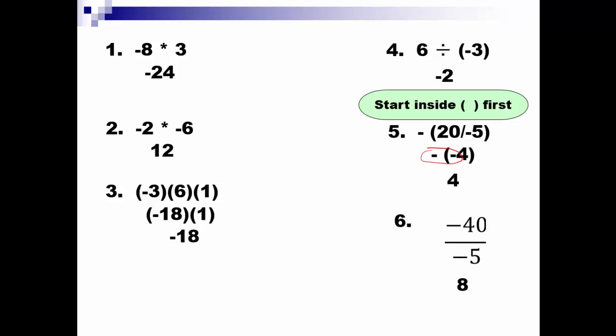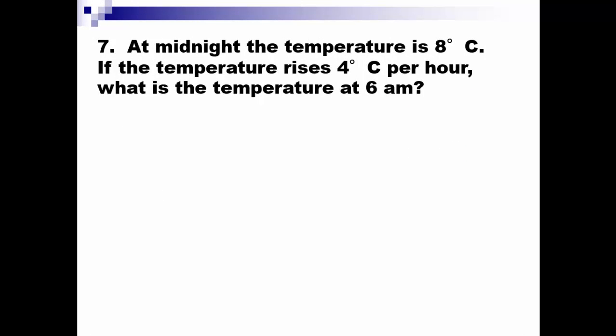Hopefully you got those right — those are very similar to what we worked on in class today. Let's end tonight with a word problem. At midnight the temperature is 8 degrees Celsius. If the temperature rises 4 degrees Celsius per hour, what's the temperature at 6 a.m.? Take a minute, try this problem, and then come on back and check my solution.